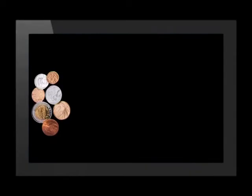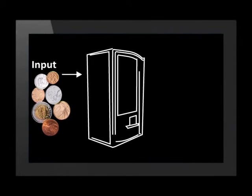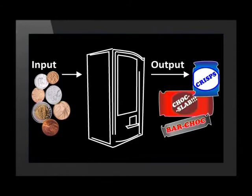Another example of a function at work in real life is the vending machine. The money we put in is like the input variable. The amount of things we can buy is dependent on the amount of money we put into the machine. The output is the food we buy. This brings us to the next thing to learn: domain and range.